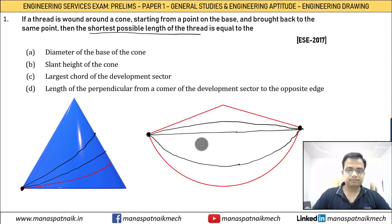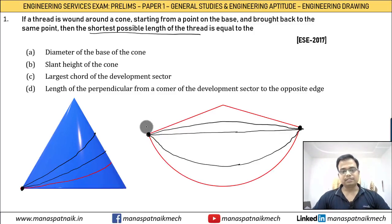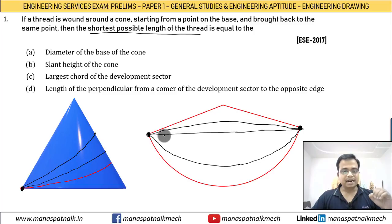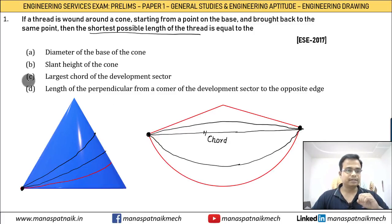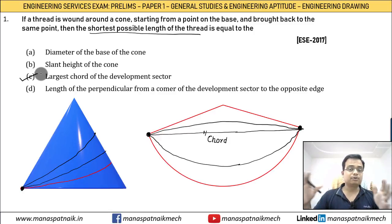The development of a cone is the sector of a circle, and the straight line in that sector is nothing but the chord. So the correct answer is the largest chord of the development sector — option C is correct. This is how you need to frame your mind: see the problem in the right direction.